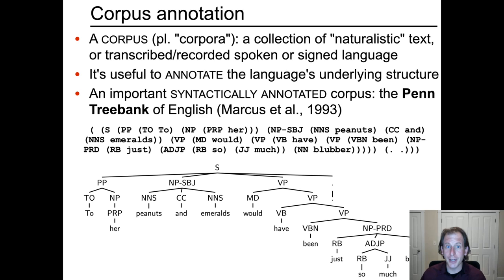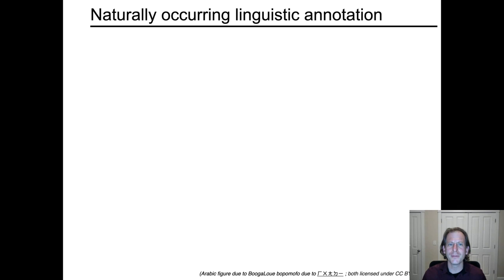Now, this sounds like a lot of labor, and it is. Once you've collected the text, you have to get an expert trained in knowing the structure to write it down. But if you step back and reflect, it turns out that there are many instances in the history of writing systems of the world that you should think of as naturally occurring linguistic annotation. This kind of annotation process is actually built into writing systems in various ways, differently for different writing systems.